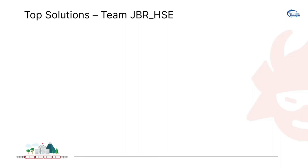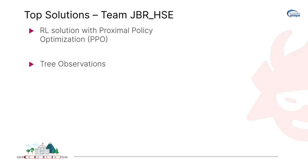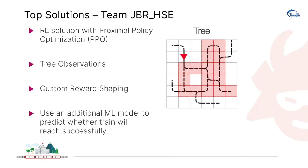Next, team JBR-HAC has the top RL solution in the competition. They use a shared proximal policy optimization (PPO) algorithm on all agents, as well as tree observations natively available in the environment with some customization on top. They also have custom reward shaping with very domain-specific ideas. My personal favorite idea they use is an additional ML model which predicts whether the train will reach successfully — only if it crosses a certain threshold do they allow the train to leave. Such a simple heuristic could even be used with operations research ideas.